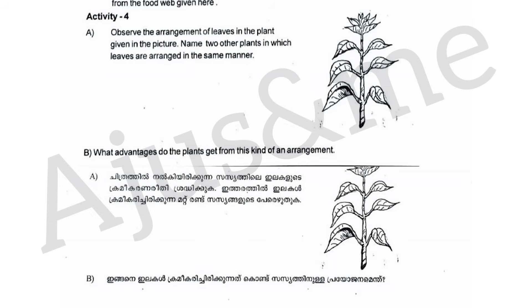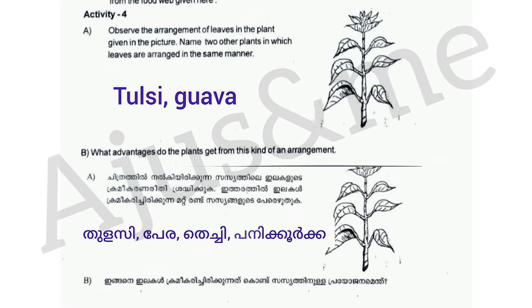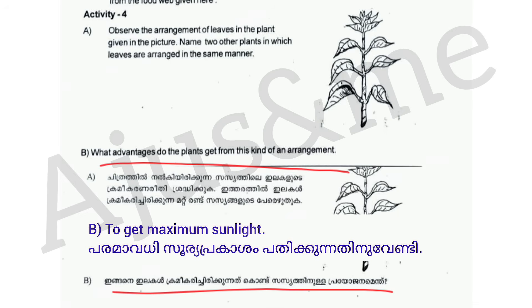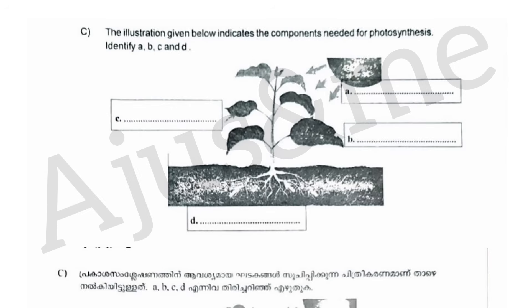Name two other plants in which leaves are arranged in the same manner. Plants will have to arrange their leaves to get maximum sunlight — it will be a benefit for everyone. The illustration given below indicates the components needed for photosynthesis.